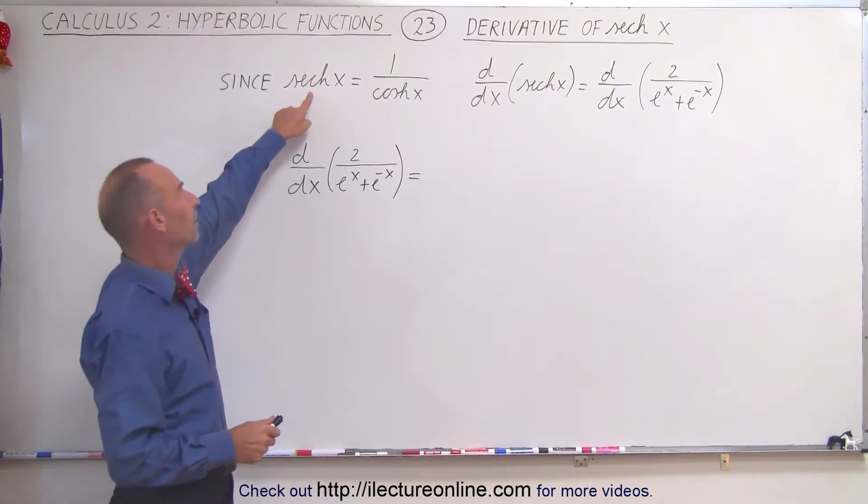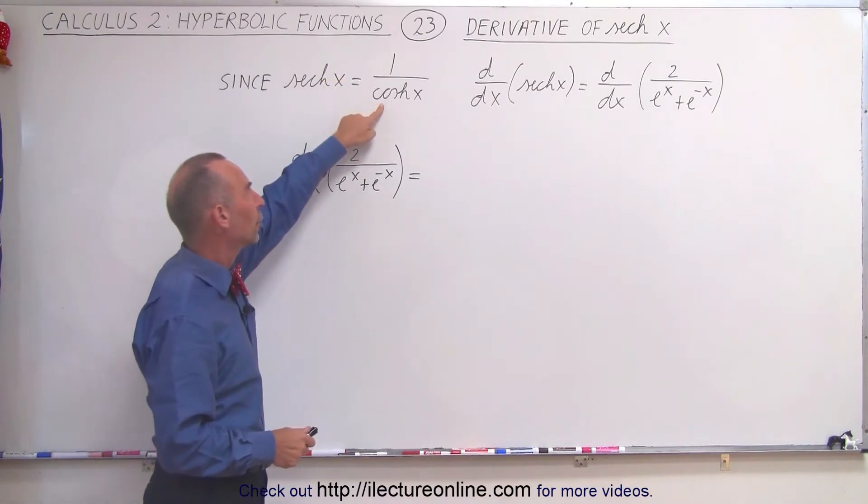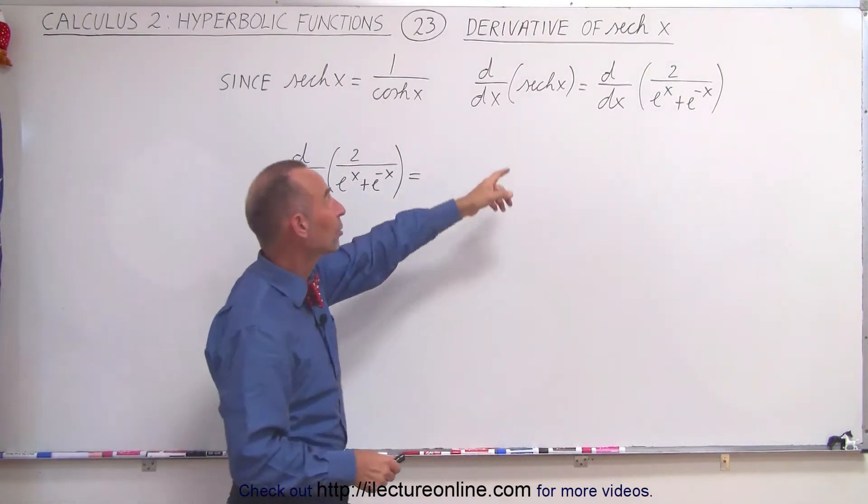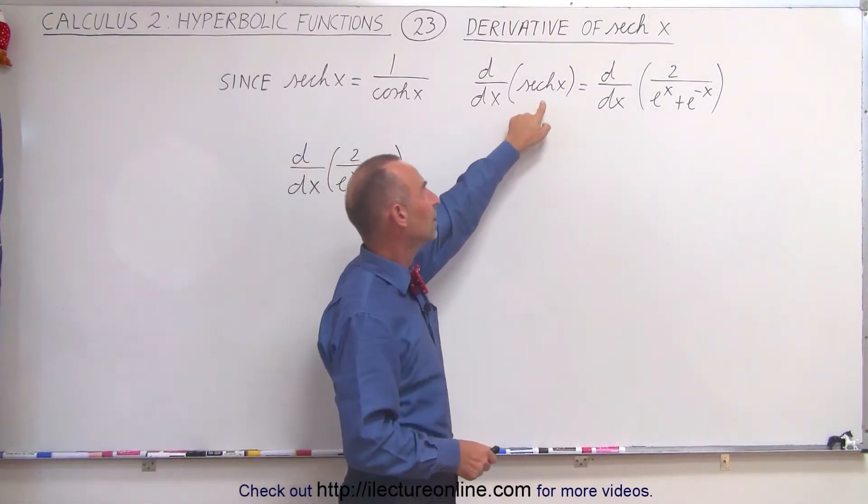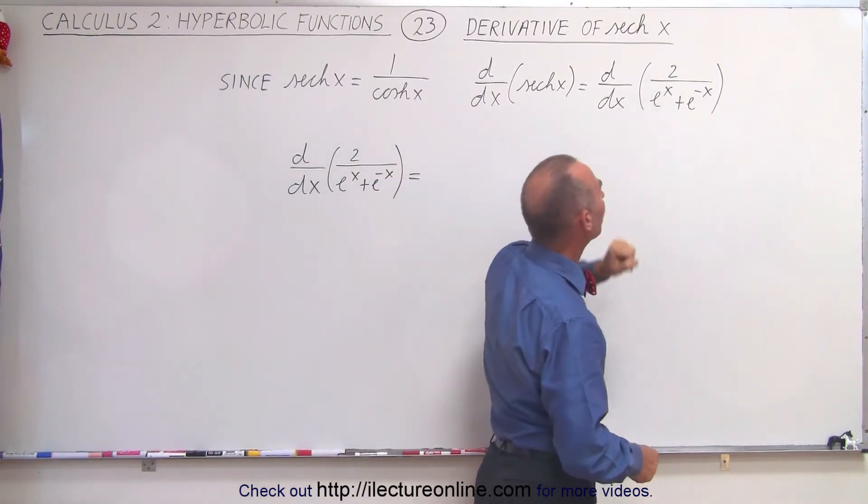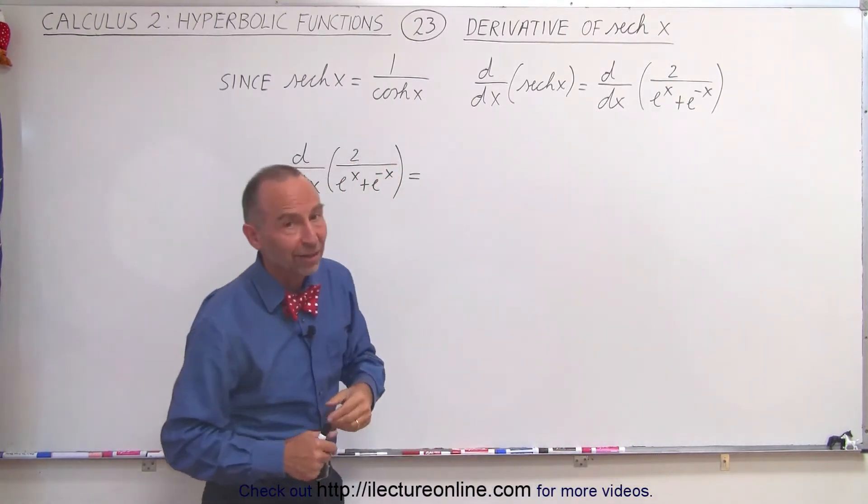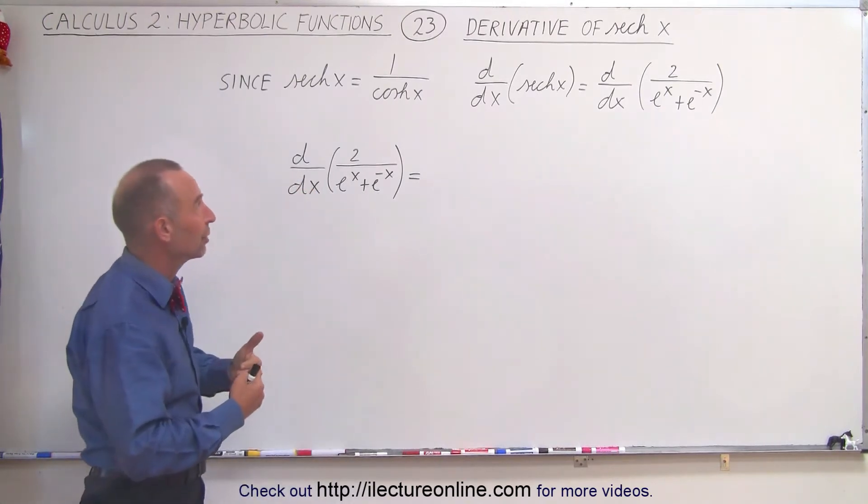The hyperbolic secant can be written as 1 over the hyperbolic cosine, which means that taking the derivative of the hyperbolic secant is taking the derivative of 2 over e to the x plus e to the minus x, basically the expression for the hyperbolic cosine but inverted.